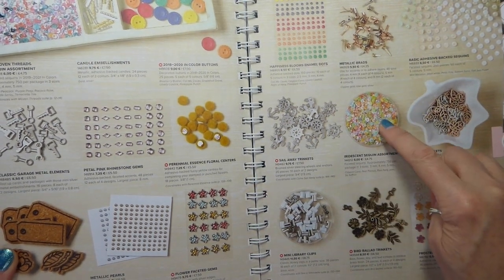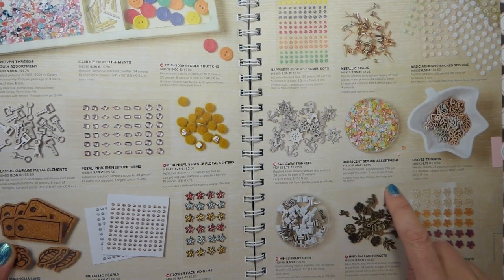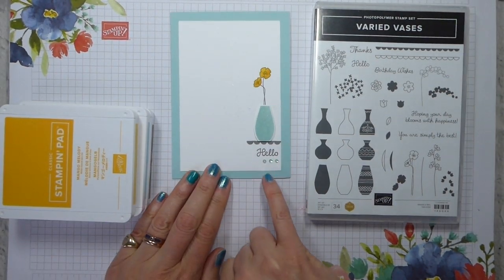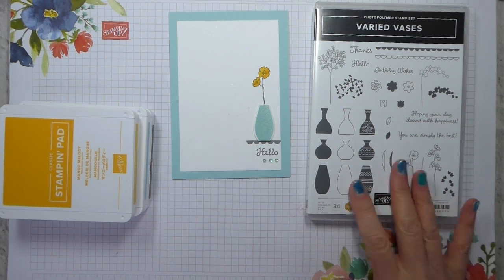I'm also using the Iridescent Sequin Assortment, which has Calypso Coral, Pear Pizzazz, Pool Party, Pink, and So Saffron. So I'm going to be picking out the Pool Party, which is what I've got down here. Some of the little baby sequins. So let's get started.